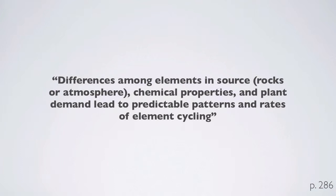That being said, we're going to spend a little bit of time on the phosphorus cycle. It's important to note that the differences among elements in the source of that element, whether they come from the rocks or the atmosphere, the chemical properties of each of the elements in its different forms, and plant demand leads to predictable patterns and rates of element cycling.